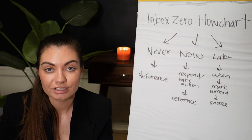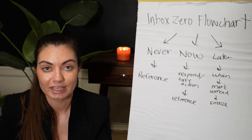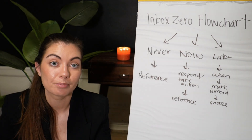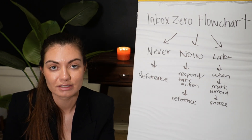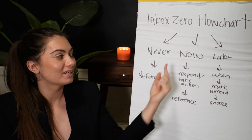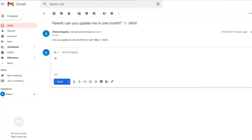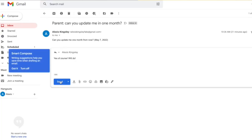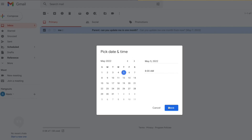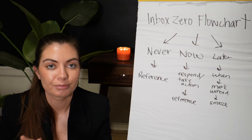Another example from teaching: I might have a parent reach out and say, 'We're thinking of transferring him to a different math class, but we don't want to do it right away — can you email us in a month updating us on his progress?' That's a situation where I have an action item, but it's later — in a month. So I'll mark that email as read and snooze it for a month from now. It'll show up in my inbox a month from now as a trigger so I remember to respond to them.